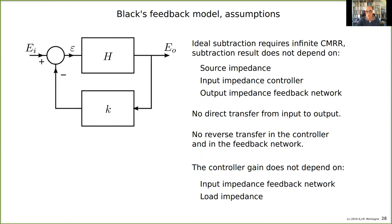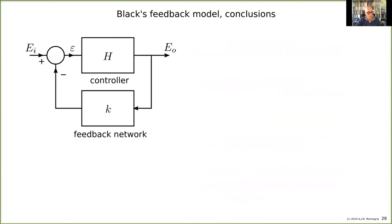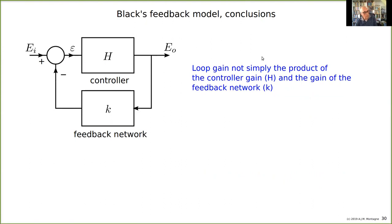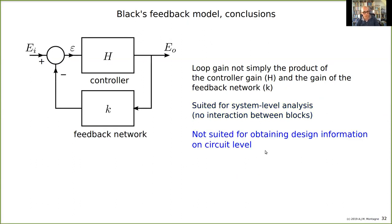So in this case, the conclusions will be that the loop gain is not simply the product of H and k. There are many more terms involved and that makes it difficult to design with this model. So it is suited for system-level analysis rather than for circuit design. That is the most important conclusion of the model of the feedback. And there are some examples in the book that illustrate this, 10.1 and 10.2. So this is what I wanted to say about the model of Black.